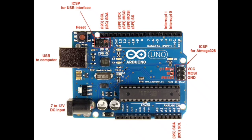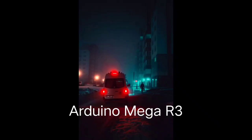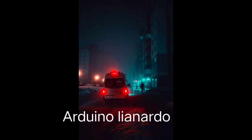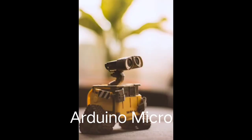We have different types of Arduino boards. For instance, Arduino Uno R3, Arduino Mega R3, Arduino Nano, Arduino Leonardo, Arduino Duo, Lillipad Arduino, Arduino Micro, Arduino Pro Mini.